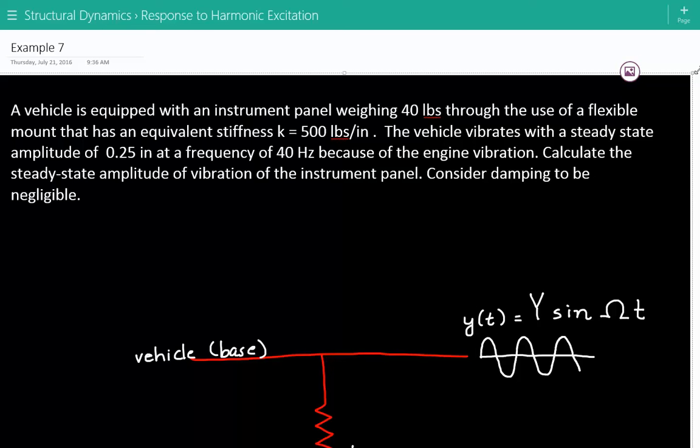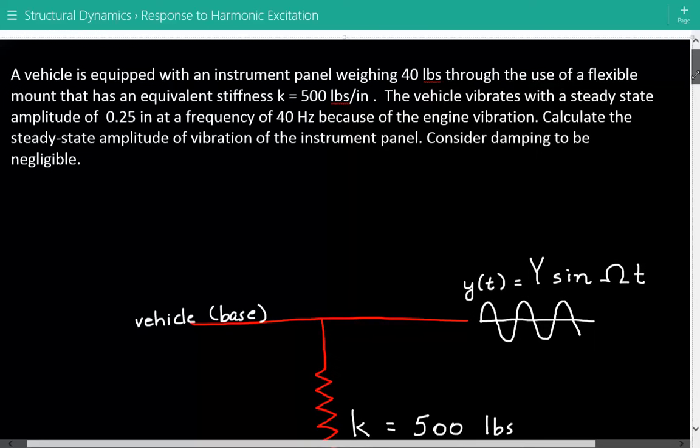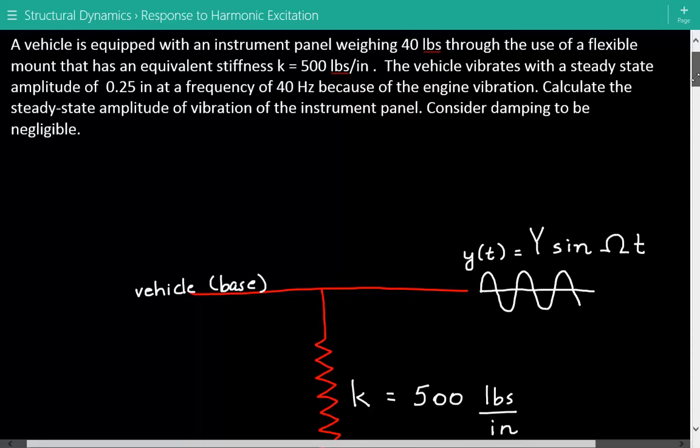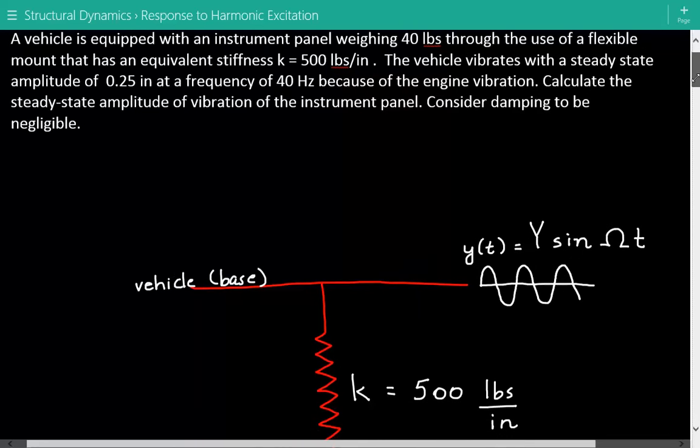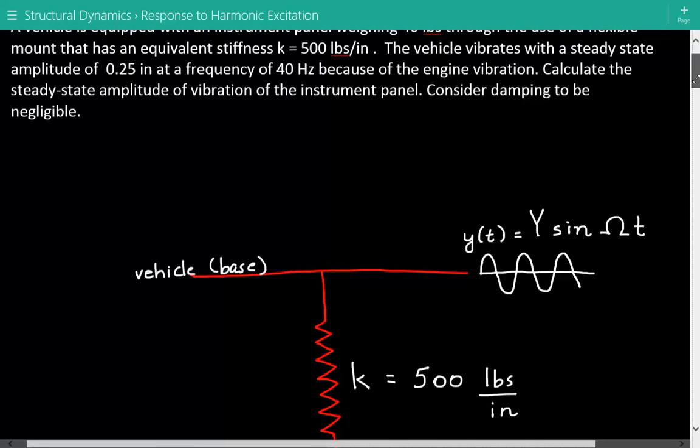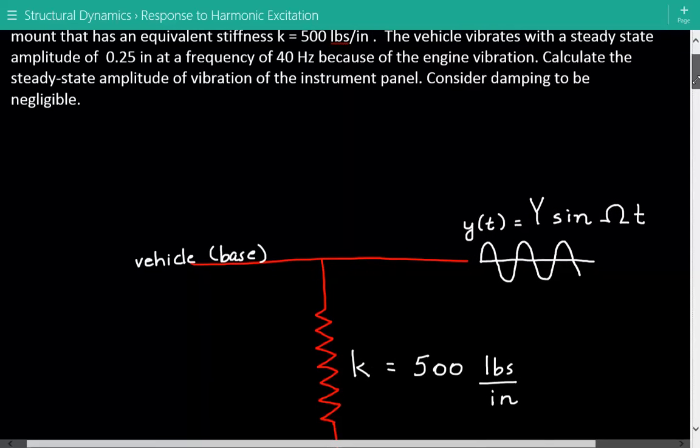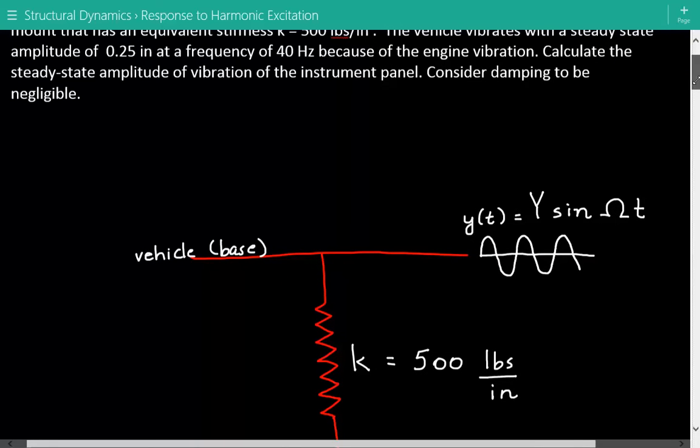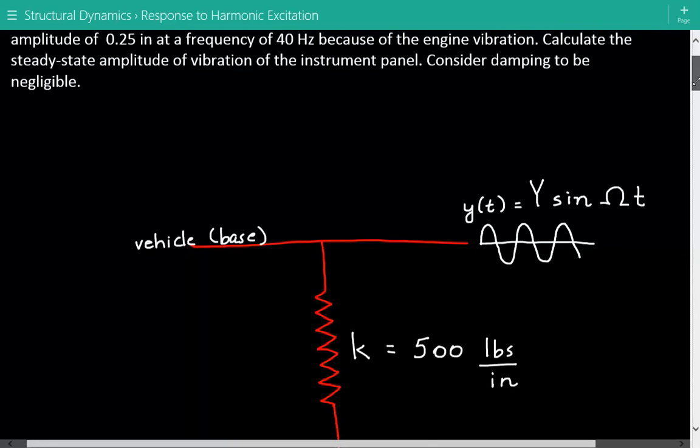Hey everybody, this is example number seven for structural dynamics covering the response to harmonic excitation. The problem statement is: a vehicle is equipped with an instrument panel weighing 40 pounds through the use of a flexible mount that has an equivalent stiffness k equal to 500 pounds per inch. The vehicle vibrates with a steady state amplitude of 0.25 inches at a frequency of 40 Hertz because of the engine vibration. We need to calculate the steady state amplitude of vibration of the instrument panel, and we can consider damping to be negligible.